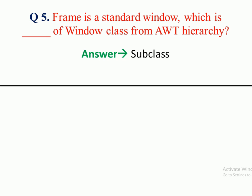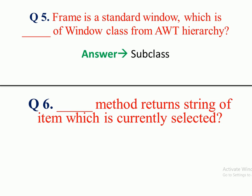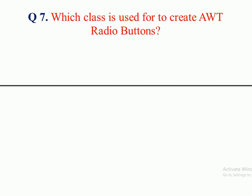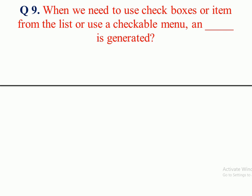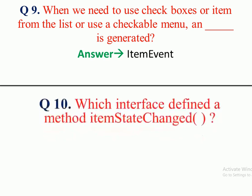Question 5: Frame is a standard window which is a subclass of the Window class from AWT hierarchy. Answer: Subclass. Question 6: Which method returns the string of item which is currently selected? Answer: getSelectedItem method. Question 7: Which class is used to create AWT radio buttons? Answer: RadioButton class. Question 8: If a class extends the ActionListener interface, it must contain a method called ActionPerformed method. Question 9: When we need to use check boxes or items from a list or a checkable menu, which event is generated? Answer: ItemEvent is generated.